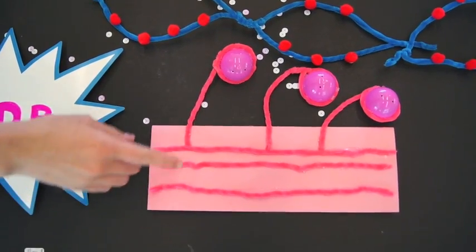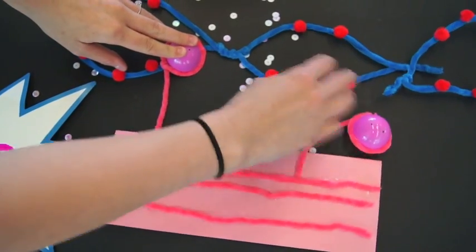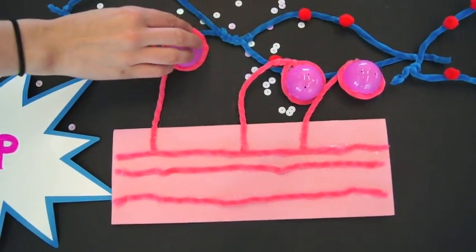These are thick filaments, which contain myosin heads. The myosin then attaches to the actin and pulls it towards the center of the sarcomere.